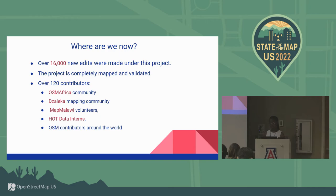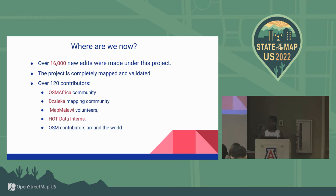During the project we made over 16,000 new edits in the area, and now the project is completely mapped and validated. Over 120 people from around the world contributed, including the OSM Africa community during a map-a-thon that Malawi hosted that month. It was amazing to see that some people living at the camp were among the top contributors — you could see how empowered they were. They owned the project and were committed to keeping the mapping going. Our map-a-thon volunteers and HOT data interns also reached out and used this as one of the tasks they validated.